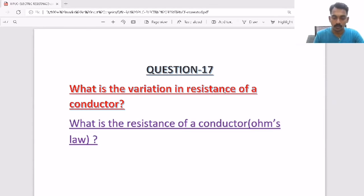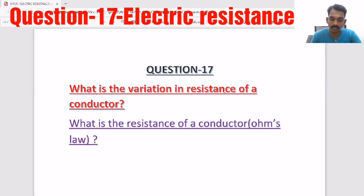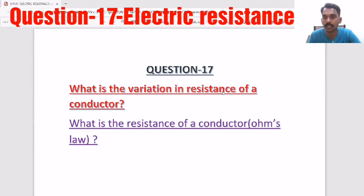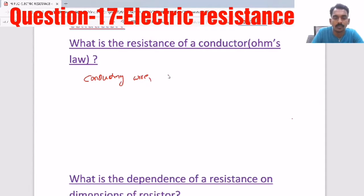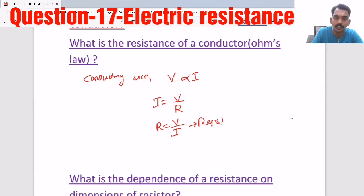Good morning everyone. We are going to discuss question number 17, which is about resistance — how the resistance of a conductor varies, what factors it depends on, and how questions will be asked based on this concept. The first thing we need to know is Ohm's law. Ohm's law states that for any conducting wire, voltage and current are proportional to each other, so I = V/R or R = V/I.